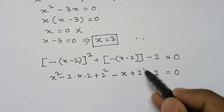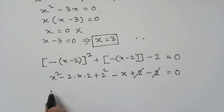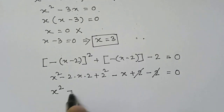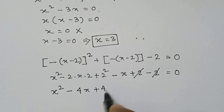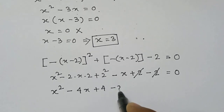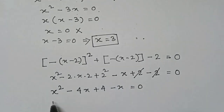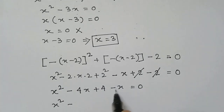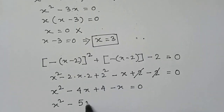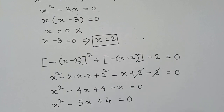So this plus 2 and minus 2 will cancel out, and this becomes x squared minus 4x plus 4 minus x equals 0, which becomes x squared minus 5x plus 4 equals 0.